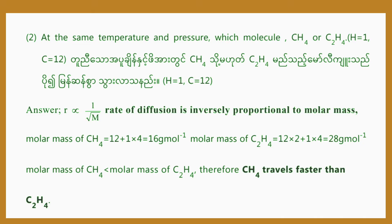Comparing CH4 and C2H4. Using Graham's Law based on molar mass: CH4 is 16 grams per mole, C2H4 is 28 grams per mole. Since CH4 has a lower molar mass, the CH4 molecule travels faster than C2H4.